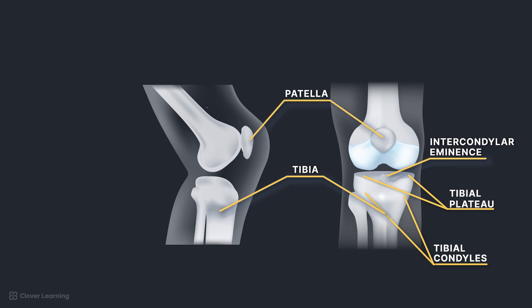Finally, the patella, or kneecap, is the largest and most constant sesamoid bone in the body. And the patellofemoral joint is the articulation between the patella and femur.